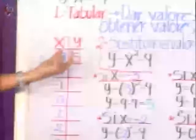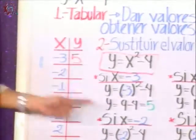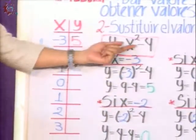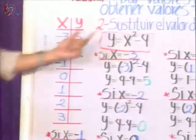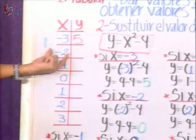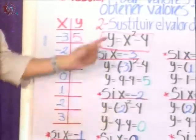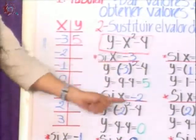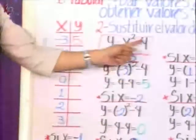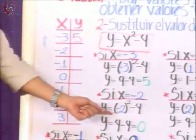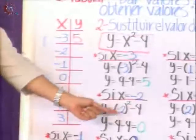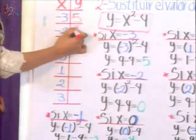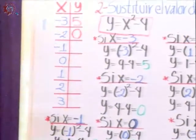Now, when x equals minus 2, if x is minus 2, I will do exactly the same thing in this function. Everywhere x appears, I will now put the value minus 2. So it's y equal to minus 2 al cuadrado minus 4. I do the same, I will operate. Minus 2 times minus 2 gives me 4, minus this 4, I obtain the value of y would be 0, and I place the 0 here.